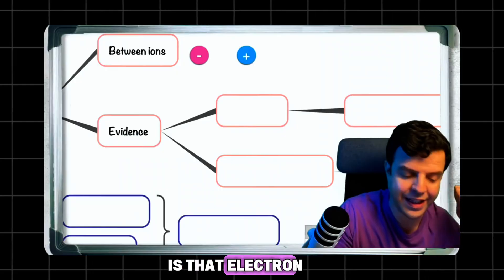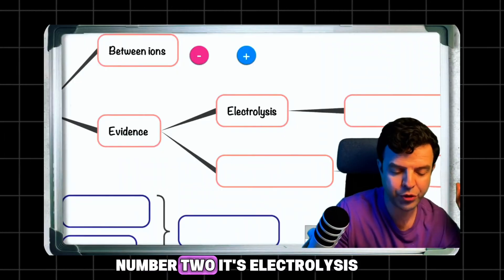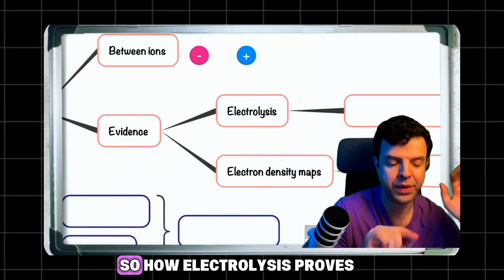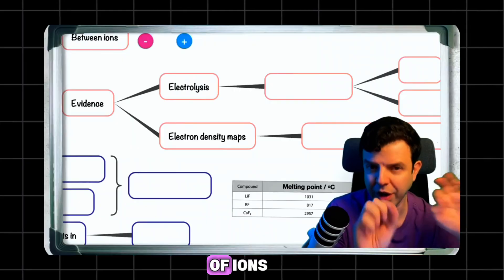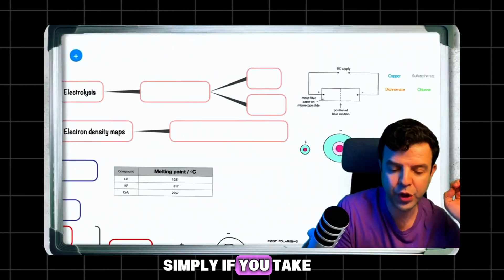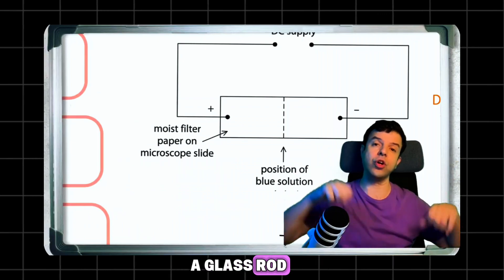Number one is the electron density map. Number two is electrolysis. How does electrolysis prove the existence of ions? Simply, if you take an ionic compound, put it on a glass rod,